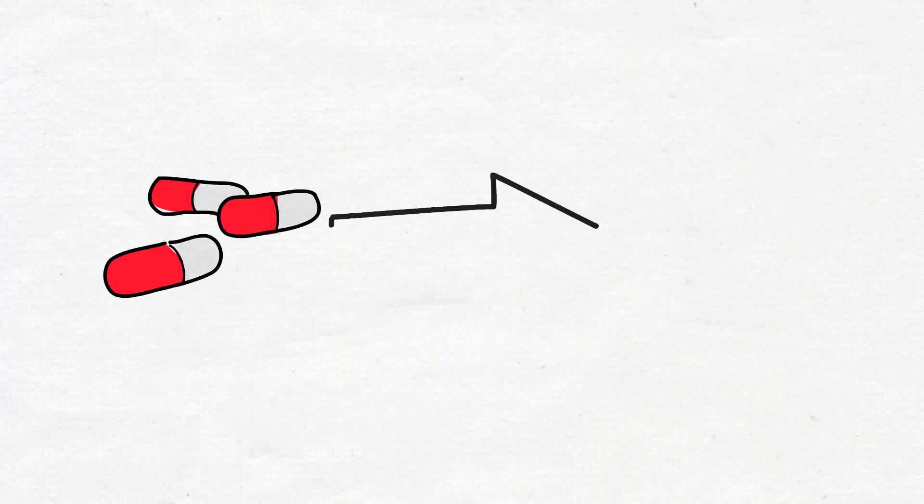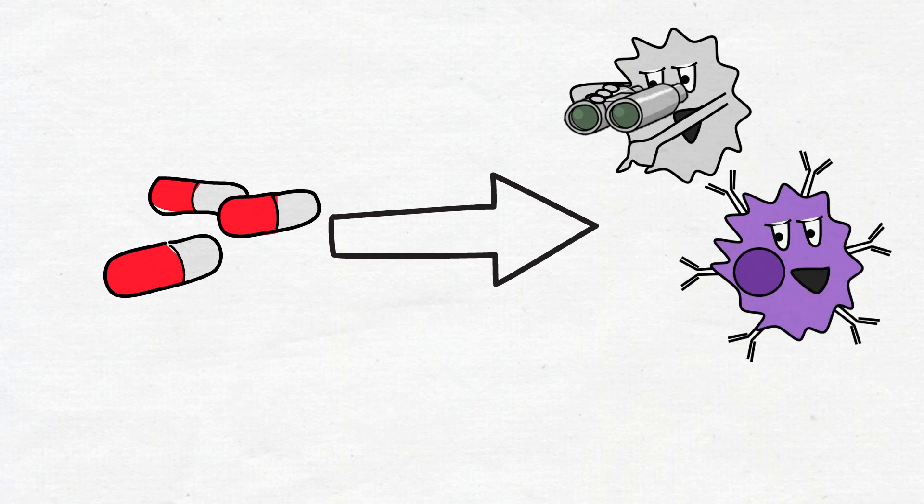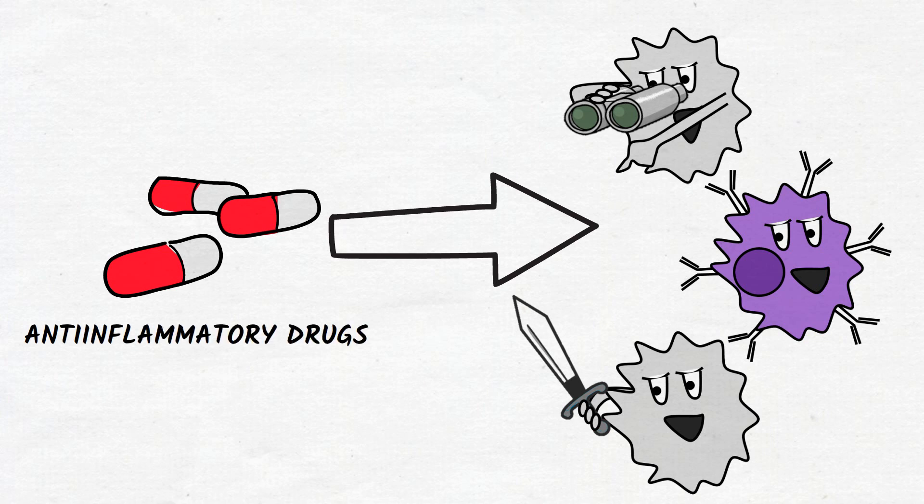Treatments can't cure autoimmune diseases, but the goal is to suppress the immune system and ease inflammation signs and symptoms. Anti-inflammatory and immune-suppressing drugs are used. Having a well-balanced diet and getting regular exercise is also important and may help.